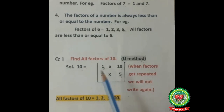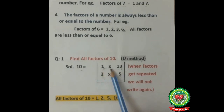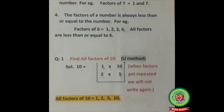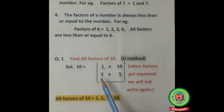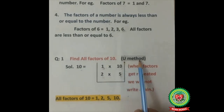Number is 10. We start from 1 — as already discussed, 1 is a factor of every number. Ten is divisible by 1 at 10, so we write 1 multiply 10. Ten is divisible by 2 at 5, so we write 2 multiply 5. Is 10 divisible by 3? No. Is 10 divisible by 4? No. Is 10 divisible by 5? Yes, at 2 — but we will not write it because when factors get repeated, we do not write them again. We then turn it as a U shape — this is called the U-method.